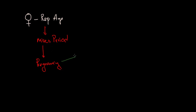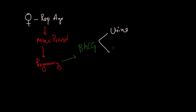Today we discuss beta HCG testing, which helps in the diagnosis of pregnancy. Beta HCG can be tested either in the blood or in the urine, and both of them have their own advantages and disadvantages.